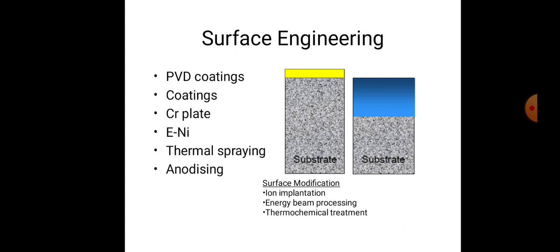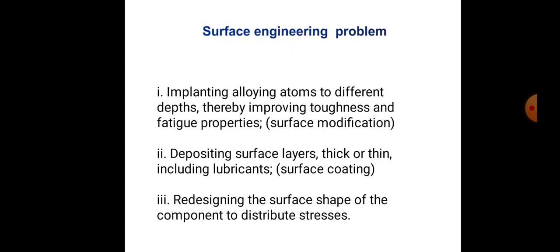A figure shows the substrate with PVD — physical vapor deposition — coating. There are also chromium plate coatings, nickel coatings, thermal spraying, and anodizing as surface engineering treatments. Surface modifications include ion implantation, energy beam processing, and thermochemical treatment.